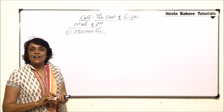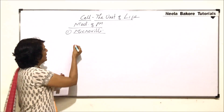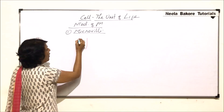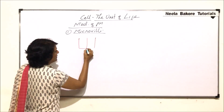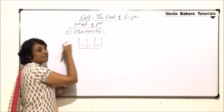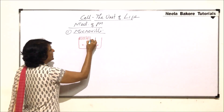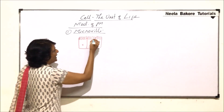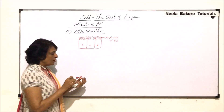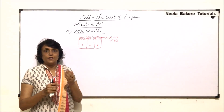Microvilli are finger-like projections on the free surface of the cell. Purposefully we are drawing a columnar cell here — this is one cell, here is another cell, and this is the nucleus. So this surface is the free one, and on the free surface side there are finger-like projections.